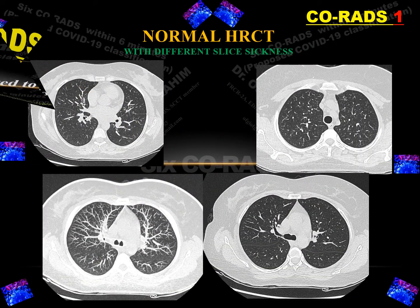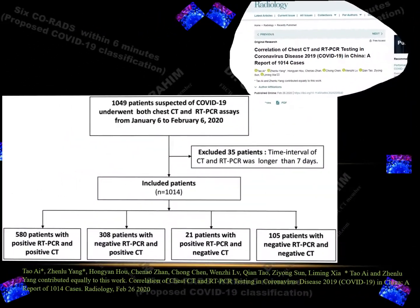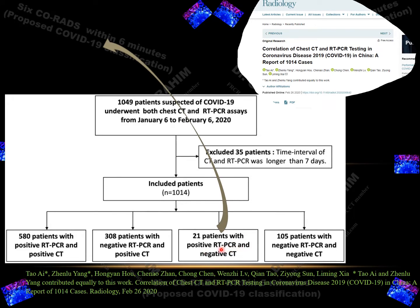As we see here, this is a normal HRCT which is considered CO-RADS 1. In a study done in Wuhan on 26 February 2020 with more than 1,000 people, 21 patients had positive RT-PCR results although they had negative CT findings — meaning normal CT. So it's classified as CO-RADS 1, highly unlikely. However, there are still possibilities for a diagnosis of COVID-19 even with this highly unlikely classification.